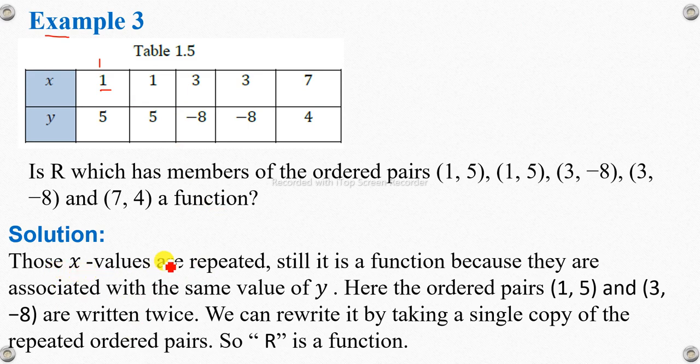These x values are repeated, but it is still a function because they are associated with the same value of y. Here, the ordered pairs (1, 5) and (3, -8) are written twice. We can rewrite it by taking a single copy of the repeated ordered pairs, so R is a function.